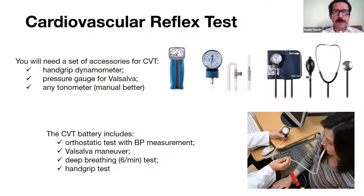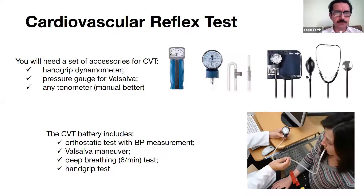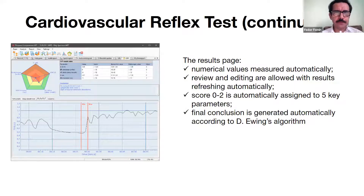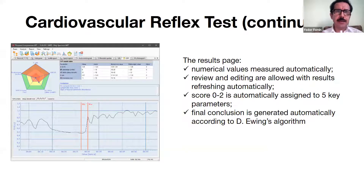For cardiovascular reflex testing, we need to perform simple provocations to see how heart rate or blood pressure changes during standard testing. Additional accessories are required, such as a hand grip dynamometer or pressure gauge for the Valsalva maneuver, which we provide in the standard HRV CVT pack that you can purchase from our company. This test is mostly focused on diabetic patients to see if diabetes has damaged the autonomic nervous system, as that is a complication of diabetes.